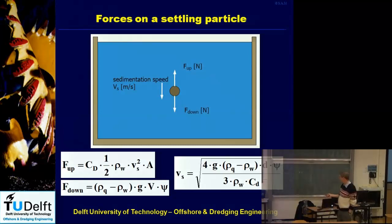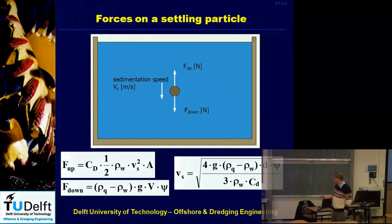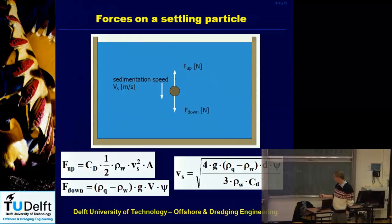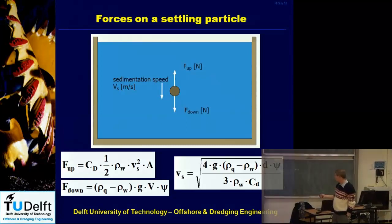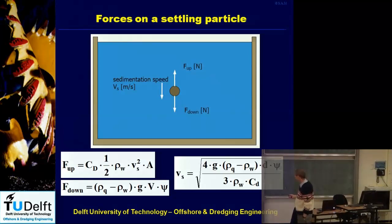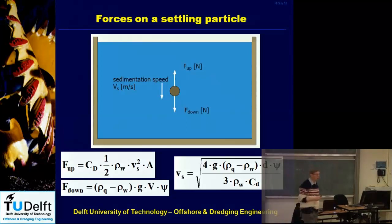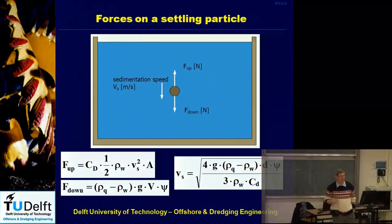Setting the two forces equal gives the general equation for terminal settling velocity, which contains the four-thirds, g, submerged density, particle diameter, shape factor, water density, and the Cd factor. In many papers the notation vt (terminal) is used; here the subscript s (settling) is used.